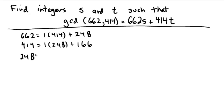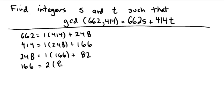Then 248 is equal to one copy of 166 with a left over of 82. And then 166 — it's 2 times 82, which would be 164, so remainder 2. So now we're at 82 equals 41 times 2.